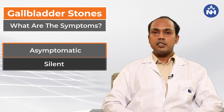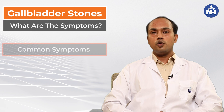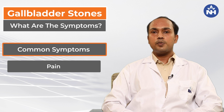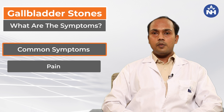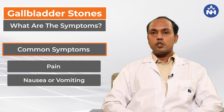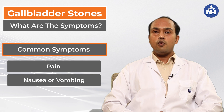How does gallstone disease present? Generally, most of the time, gallstones are asymptomatic — they are silent and there are no symptoms. But the most common symptom of gallstones is pain. Patients typically present with pain on the right side of the abdomen, and this pain can be associated with nausea or vomiting.